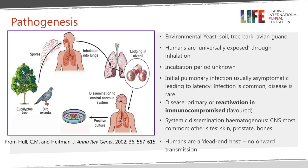The initial infection usually produces no symptoms; in a minority of cases it can produce symptoms of a pneumonia. In most cases the pathogen stays in the lungs within the alveoli or the lymph nodes and enters a period known as latent infection, whereby we are infected but there are no symptoms of disease. We know that exposure and infection is very common in adults from studies in the United States looking at antibodies throughout life, showing that the vast majority of adults have antibodies to cryptococcus.